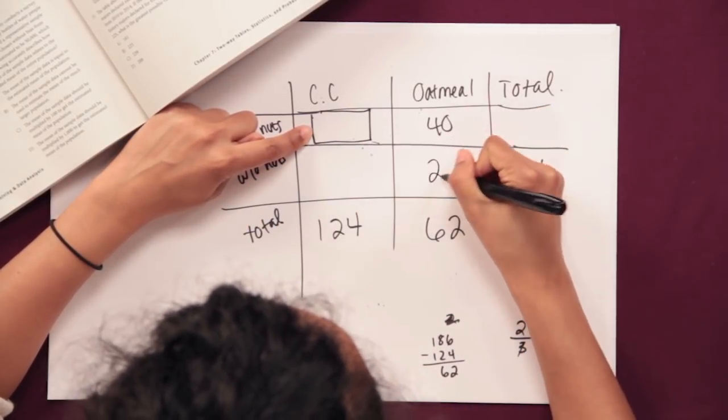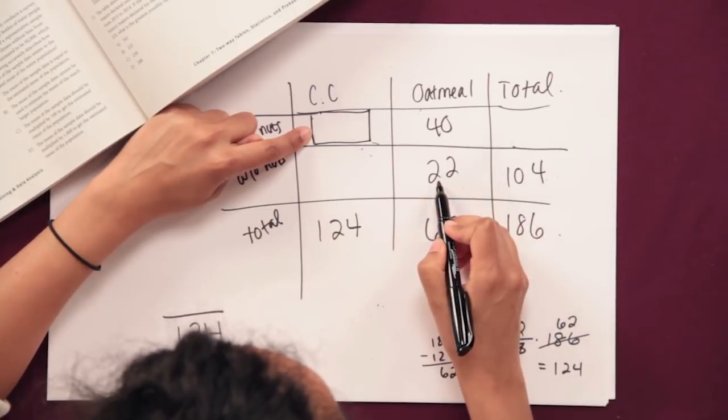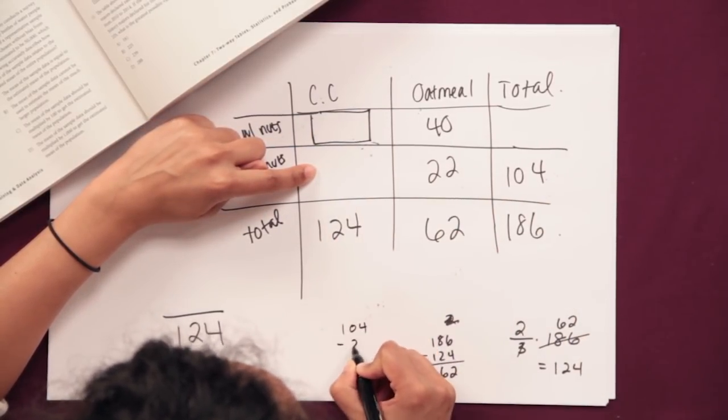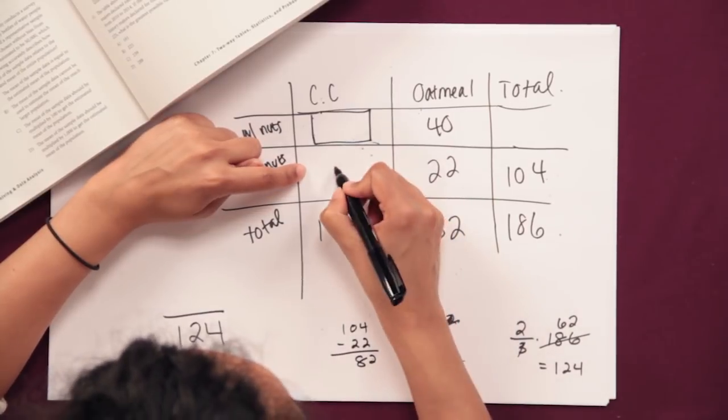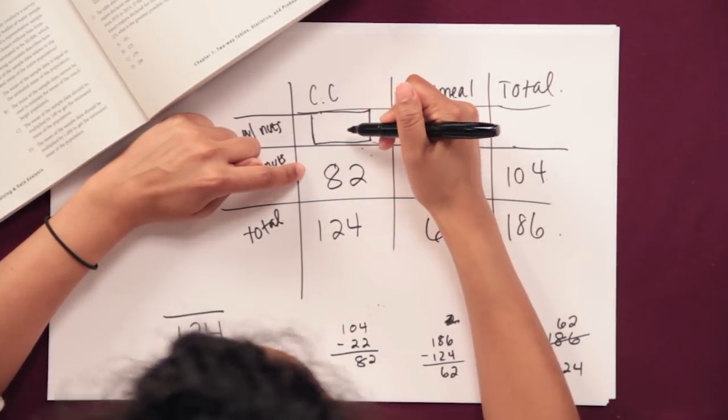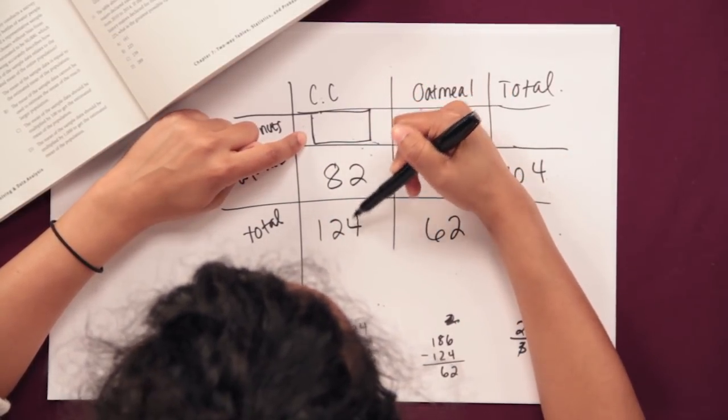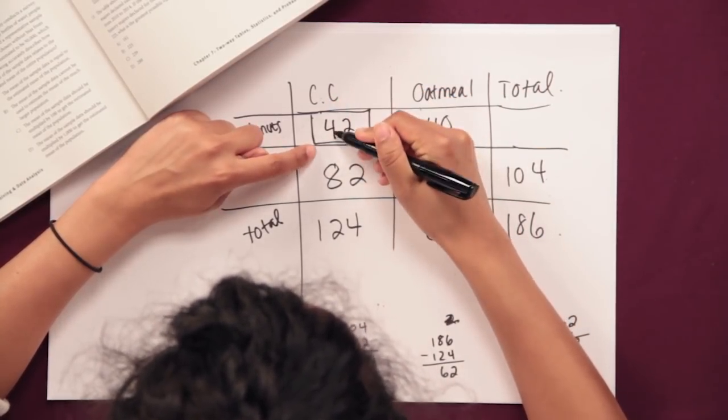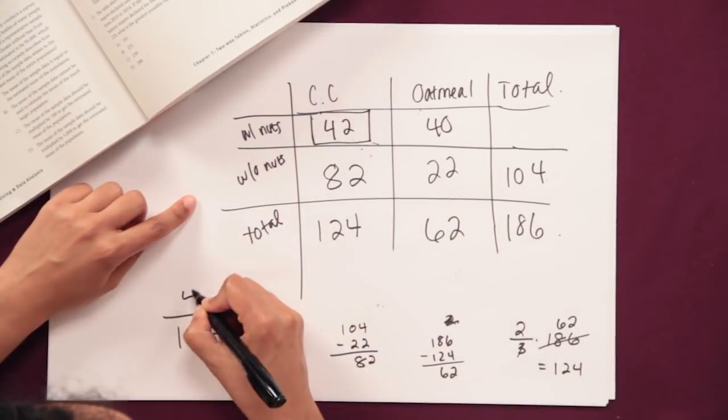Well, if this is 40, then this has to be 22 in order to sum up to 62. If that's 22, then this has to be 104 minus 22, which is going to be 82. And then that means, great, I can find out this number. So 124 minus 82 is 42. Let's do a double check if I sum that. Yep, that's 124.